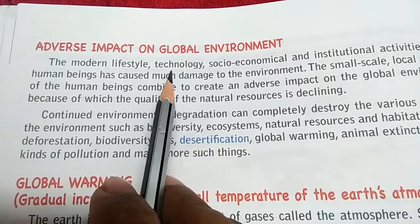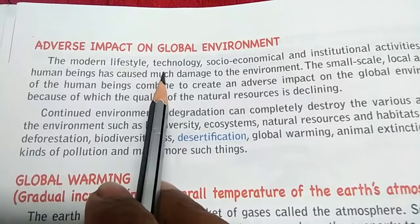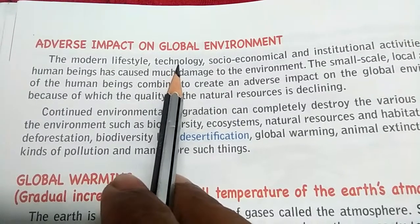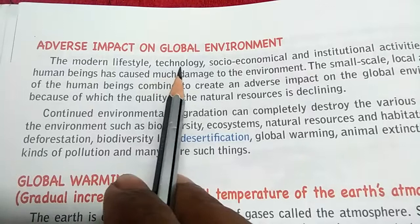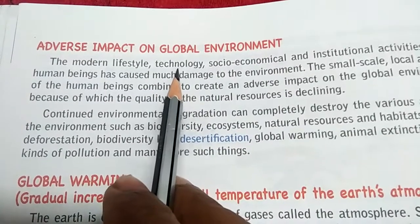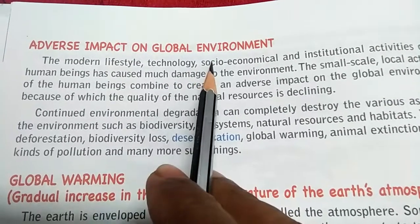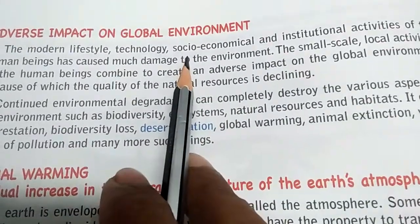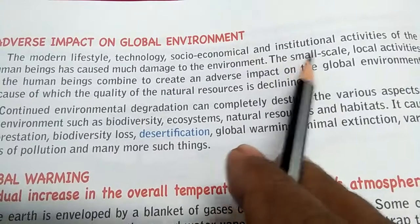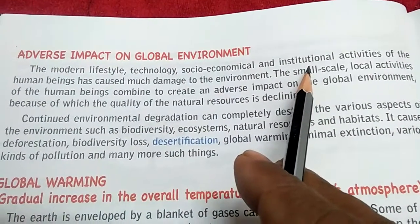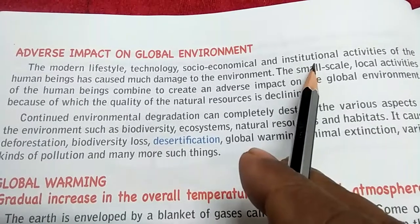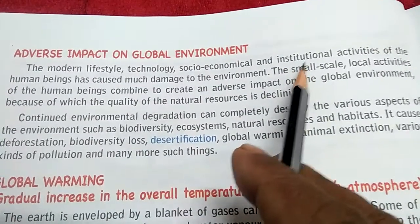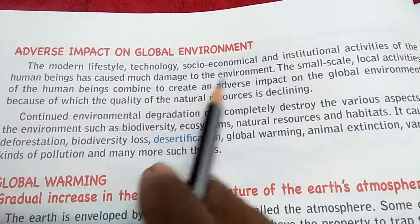We are now more dependent on technology. For example, today we are having online classes with the help of a mobile, tab, or computer. This is because of technological advancement and development. Socioeconomic and institutional activities — activities related to society and economy — and institutional activities include industries, factories, trading companies, and many more. These institutional activities of human beings have caused much damage to the environment.